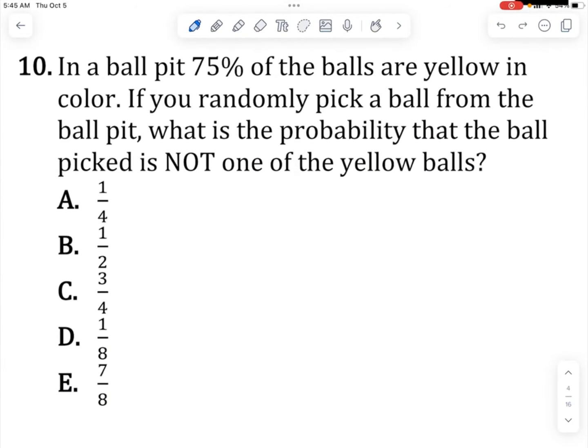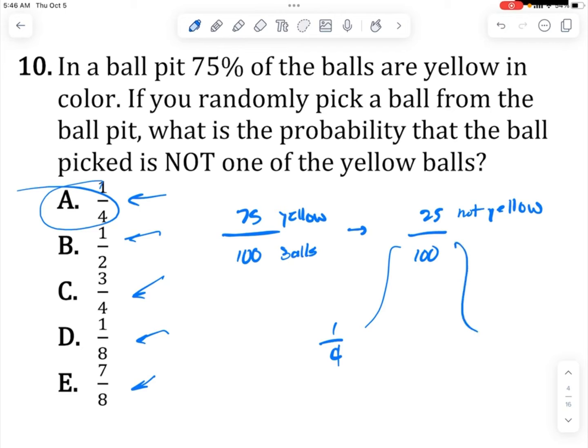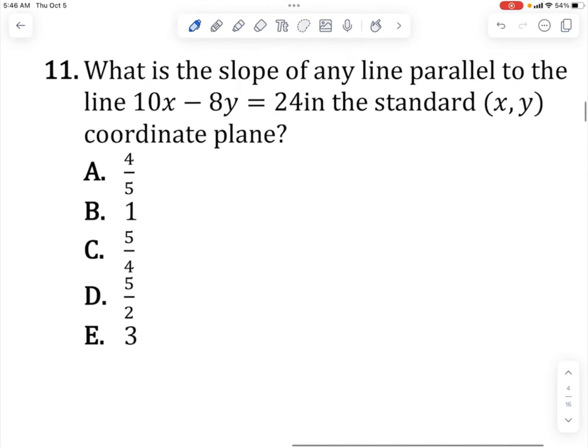In a ball pit, 75% of the balls are yellow. If you randomly pick a ball, what is the probability that the ball picked is not one of the yellow balls? If 75 out of 100 are yellow, that means 25 out of 100 are not yellow. We need to find a fraction equal to 25 out of 100. 25 out of 100 is a quarter, so that's the answer. You can cheat through this one a little if you're not sure how to reduce the fraction, which is totally okay.